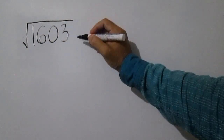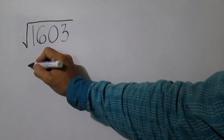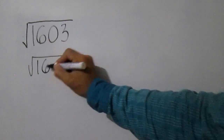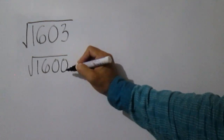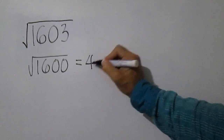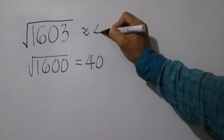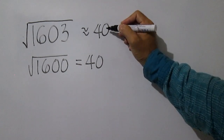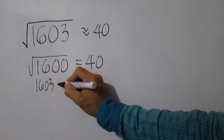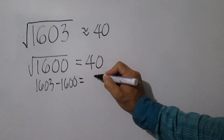Square root of 1,603. The closest perfect square less than 1,603 is 1,600, and the square root of 1,600 is 40. 1,603 minus 1,600 is equal to 3.